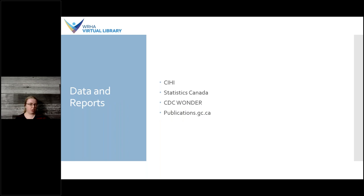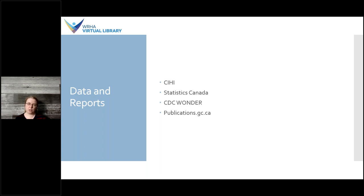For data and reports, the top sources for Canadian data are the CIHI database and Statistics Canada. CIHI tends to have more medical-focused data, whereas StatsCan has things like demographic data. CDC Wonder and publications.gc.ca are both examples of repositories of government reports — the first is American and the second is Canadian. If you're interested in reports from other countries, many countries have similar sites that list or provide access to government reports, though availability is variable depending on where you want to look.